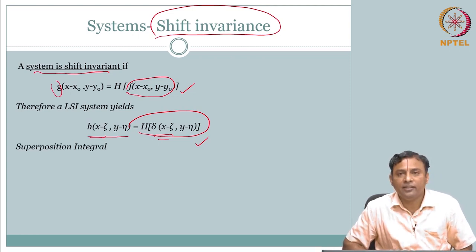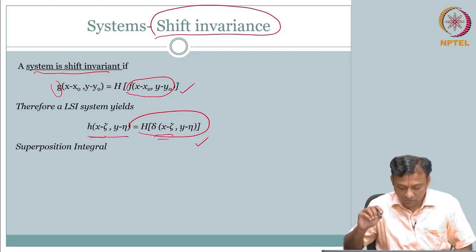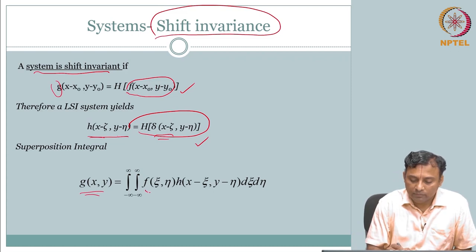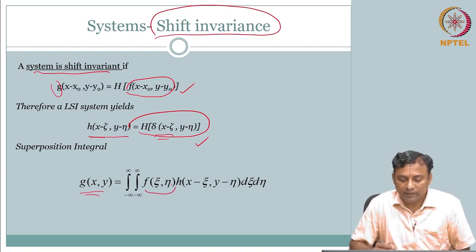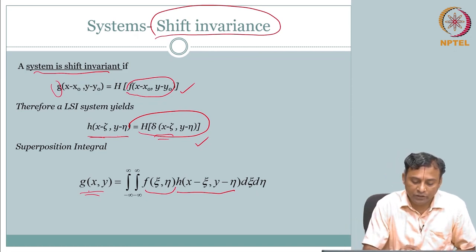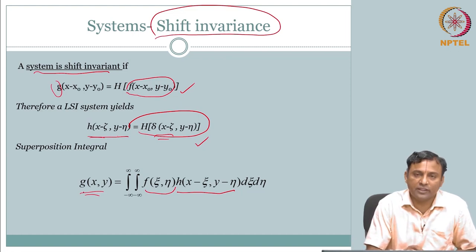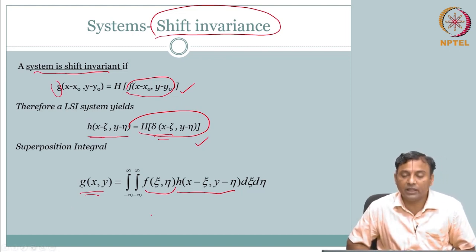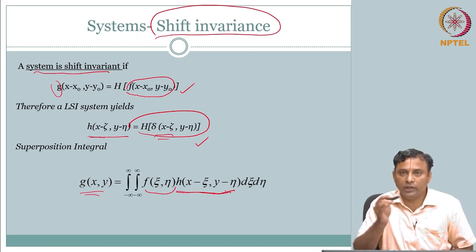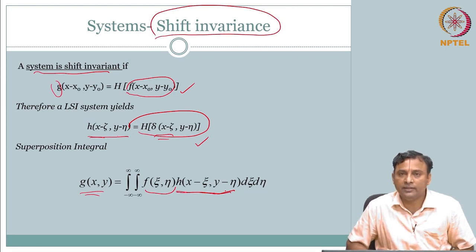Looking back at the superposition integral, using shift invariance the four-dimensional H is replaced: g(x,y) = double integral of f(ε, η) times h(x-ε, y-η) dε dη. Now it becomes much more tractable. Input and output are related by the system function. The system is not only linear but also shift invariant.